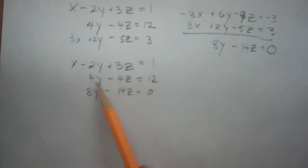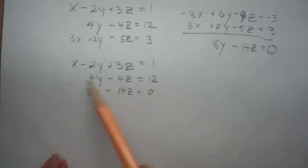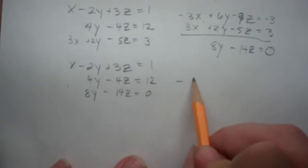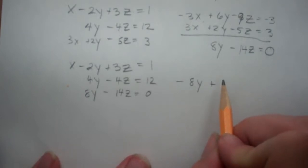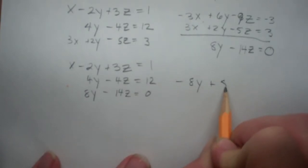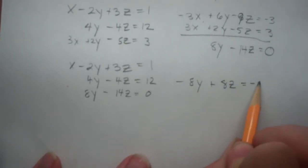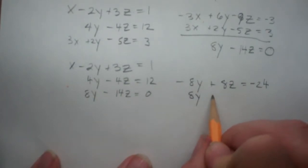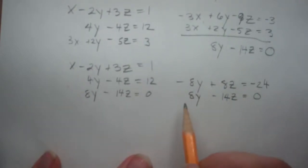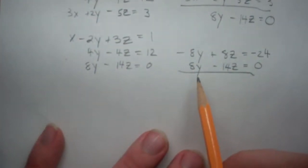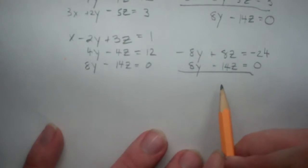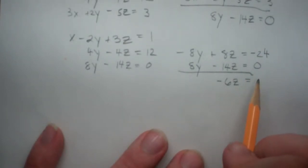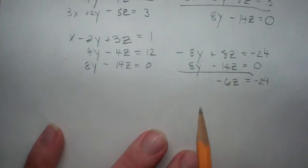How can we do that? We'll play off of the equation in the middle. If we multiply the middle equation by negative 2 and add it to the bottom equation, we can get rid of this 8y. That gives us negative 8y plus 8z is equal to negative 24. Adding that to the bottom equation, 8y minus 14z is equal to 0: negative 8y plus 8y is gone. 8z plus negative 14z gives us negative 6z, equal to negative 24 plus 0, which is negative 24.